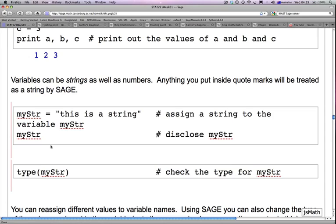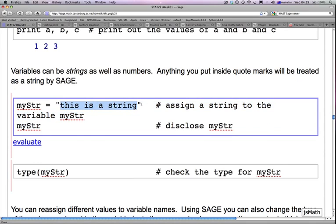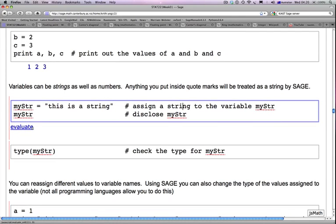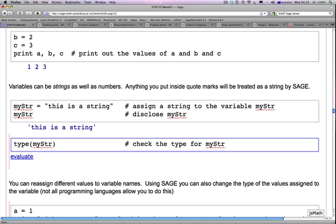Variables can be strings as well as numbers. Anything you put inside quotation marks will be treated as a string by SAGE. So, here we are assigning a string called, "this is a string," it's between quotation marks, to the variable named mySTR. And the next line is mySTR. We are simply disclosing what it is. Remember that this second line is actually just part of this comment. If I shift enter, I get mySTR as output, which is the string called, "this is a string."